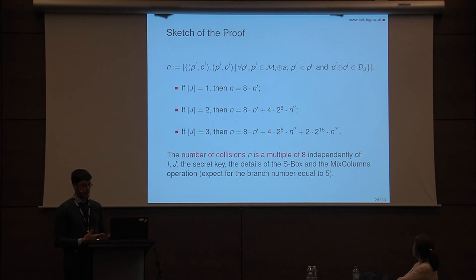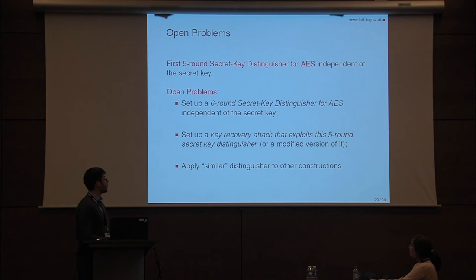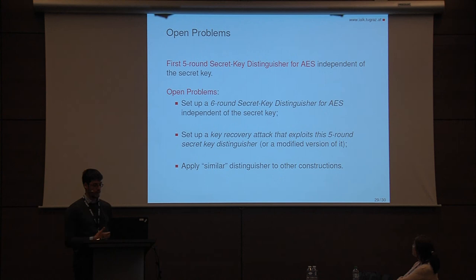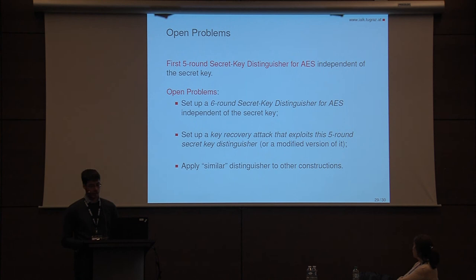An equivalent proof holds for the other initial spaces. To conclude, this is the first five-round secret key distinguisher for AES which is independent of the secret key. We leave some open problems: first, to set up a six-round secret key distinguisher independent of the secret key, or to improve this five-round distinguisher with one that is faster or requires fewer plaintexts or ciphertexts. The second problem is to set up a key recovery attack exploiting this five-round distinguisher or a modified version — remember that secret key distinguishers are usually a starting point for key recovery attacks. The final problem is to apply similar distinguishers to other constructions or to construct related-key distinguishers. That's all, thanks for your attention.